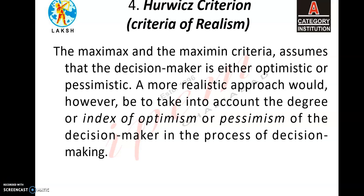Hello students, let's continue with the previous topic we started — Decision Theory, Unit number 4. In this unit we were discussing decision making environments. There are 3 types: the first one is decision making under certainty, the second is decision making under uncertainty, and the third is decision making under risk. We were starting with decision making under uncertainty.